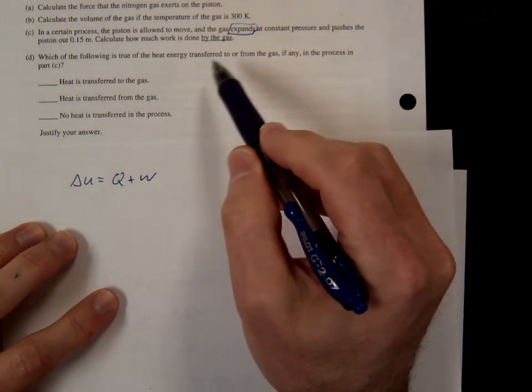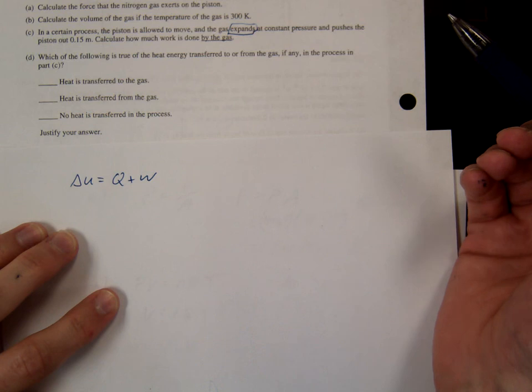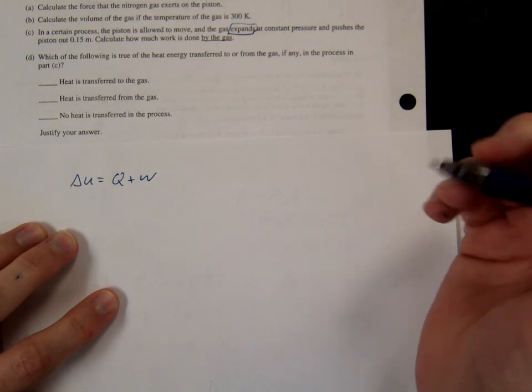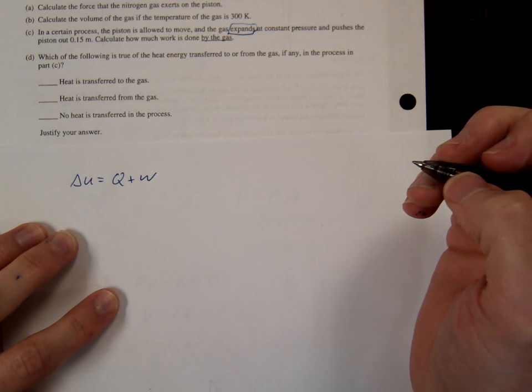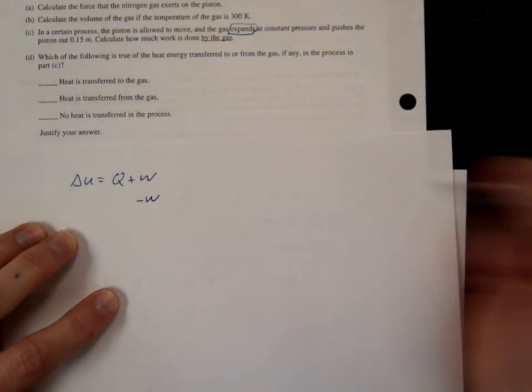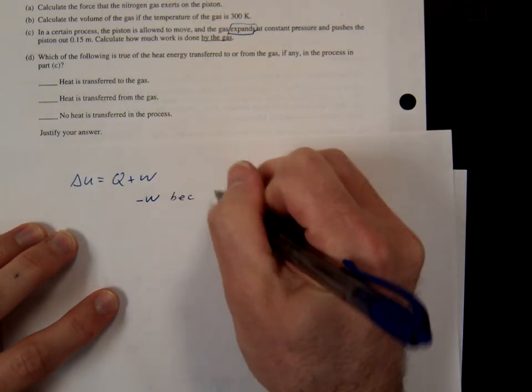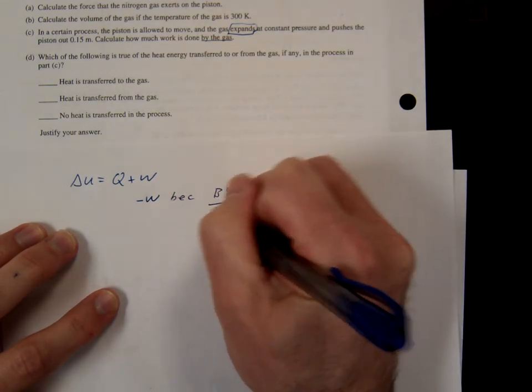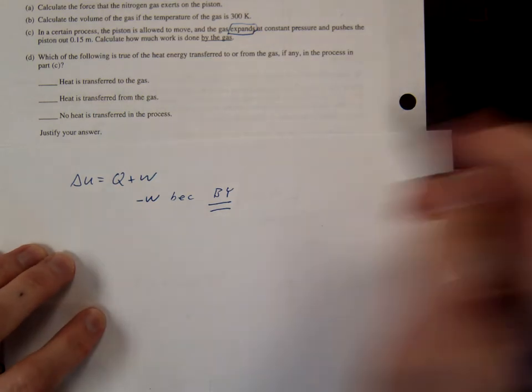Okay. So first of all, we know that work is being done by the system, right? Work is being done by the system. So is work going to be positive or negative? Negative. So you should be having a negative work here, right? Secondly, and that's because I'll just write it because by the system. And in your calculation, it would have initially been negative, right?